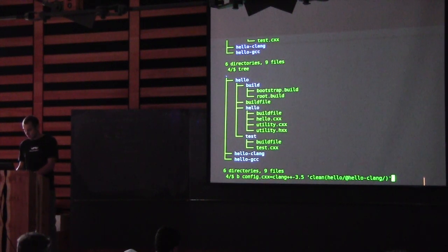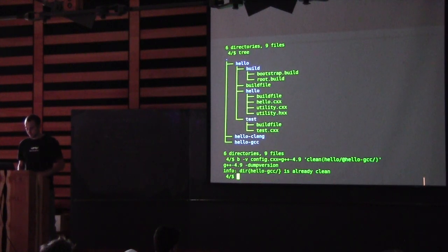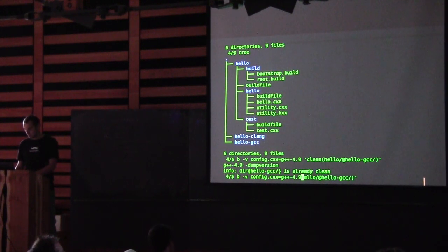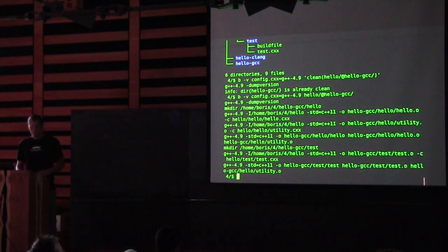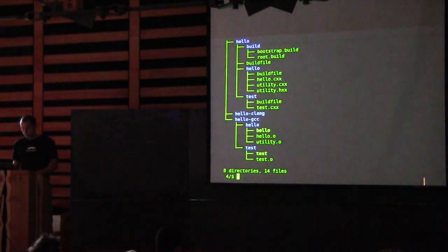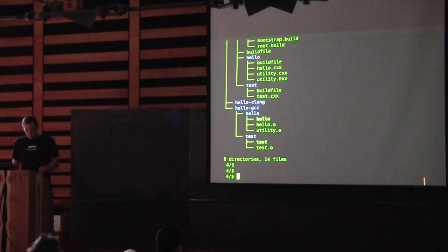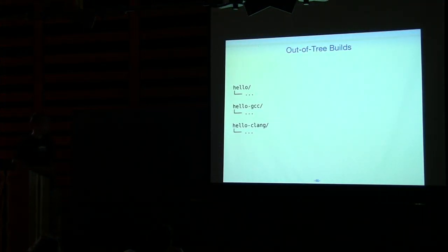Let's try the GCC configuration with verbose mode, using GCC 4.9. The actual GCC 4.9 is being used. Running again, all outputs are now in the hello-gcc directory. That's out-of-tree builds — we'll get back to a more realistic example soon.